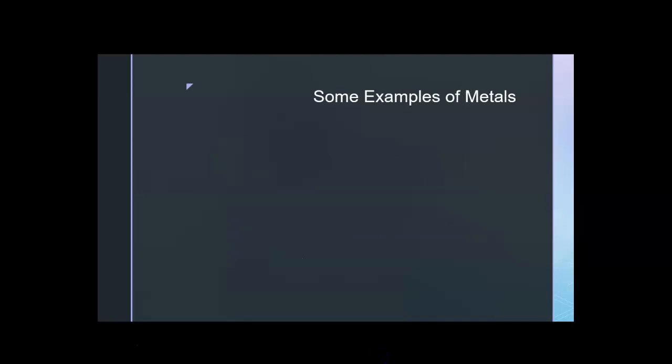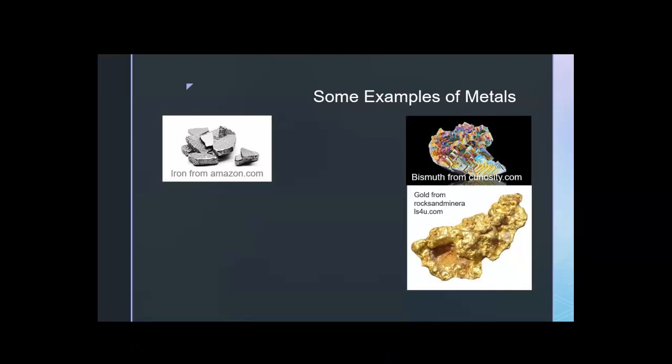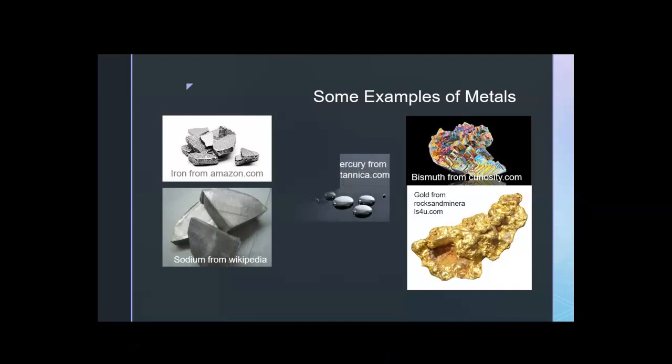What are some examples of metals? Certainly you have seen many of these. Here's iron, gold, bismuth, sodium, and mercury, which, yes, is a liquid at room temperature. All of these metals will conduct electricity, can be made to hold a shine, and conduct heat. They are good metals.